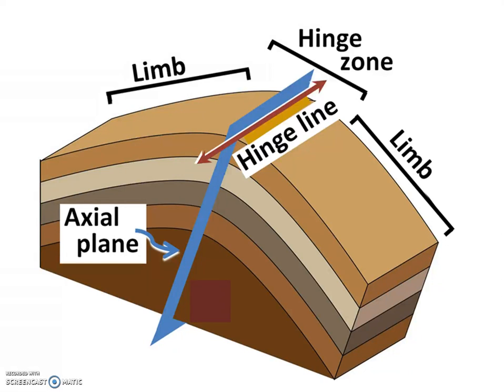There are just a few pieces and parts of a fold that are important to recognize. First, we'll look at the axial plane and the hinge line. The hinge line is a line drawn down the points of maximum curvature of each layer, located in the center of the fold. The axial plane is an imaginary surface that divides the fold symmetrically into two limbs, which refer to the two sides of the fold.